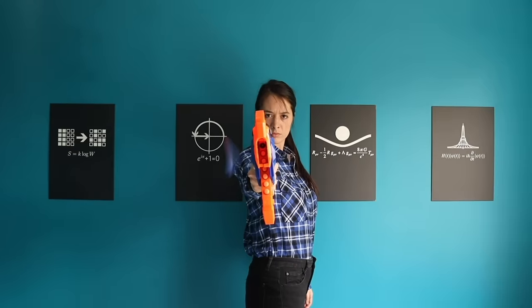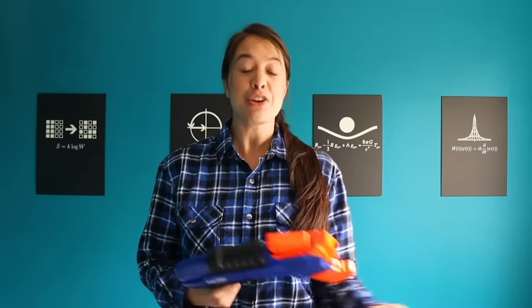Okay, so this paradox is actually called Zeno's arrow, but I couldn't find a bow and arrow. So we've got a Nerf gun instead. Just think of this as the modern day version. So far, we've dealt with paradoxes that consider how space is divided, but in this one, Zeno considers time.